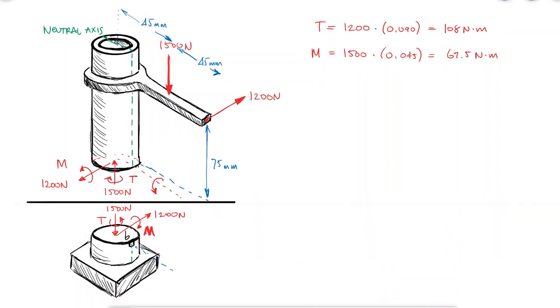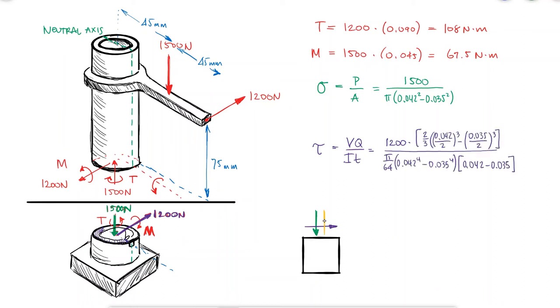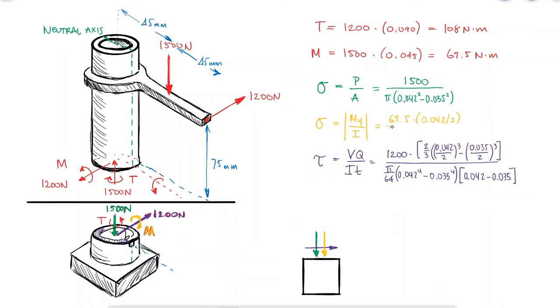From these reaction forces, we see that our stress element B is subjected to compression from the 1500 Newton load, shear from the 1200 Newton load, compression from the bending stress caused by the bending moment M, and another shearing stress from the torque T. Notice that I'm only using the magnitude of the stresses since we're already identifying the direction of the vectors of the stress on our stress element.